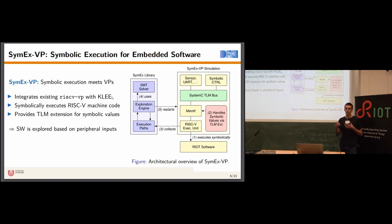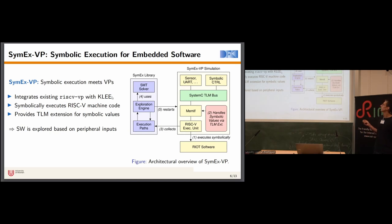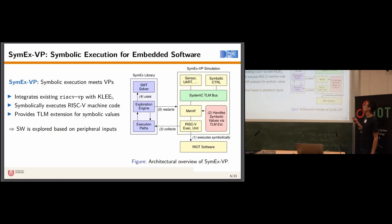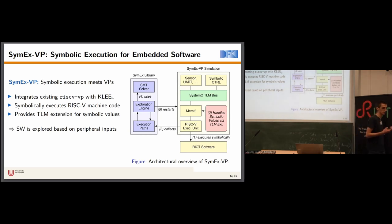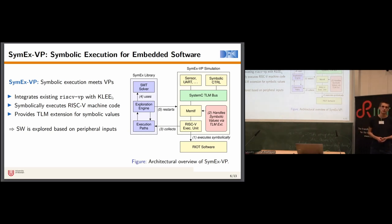SymEx-VP is very tightly integrated with the SystemC modeling language. SystemC models peripheral behavior based on a bus abstraction, so the central component of our architecture is the SystemC TLM bus, with several components attached. For example, if we have a UART peripheral as we do on the SiFive E51, that UART is attached to the SystemC TLM bus. SymEx-VP is written to allow transporting symbolic values over this TLM hardware bus abstraction through a TLM extension mechanism.